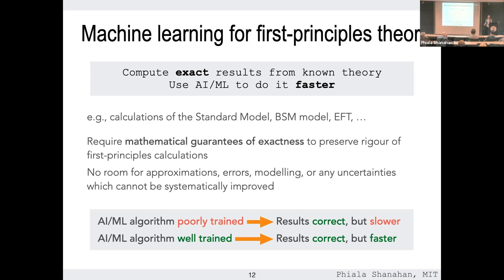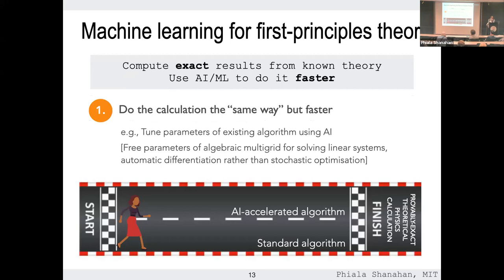The only role for machine learning here is this: you need to formulate your problem so that badly trained ML algorithms give answers that are still correct but slow, while well-trained ML algorithms give the same correct answers but faster. This is more a question of problem formulation than anything else. There's no room for black-box neural networks — it's really about designing how you formulate the question and where you put machine learning in the workflow so you preserve exactness.